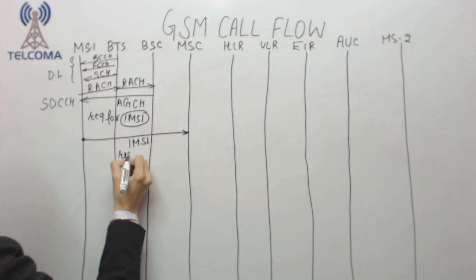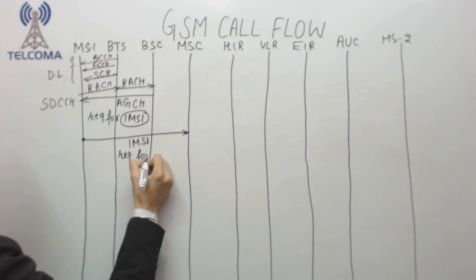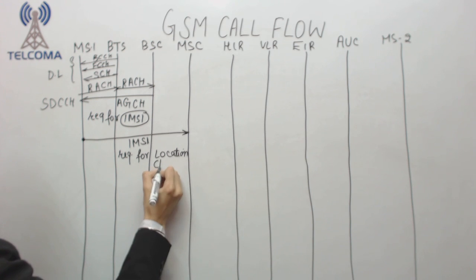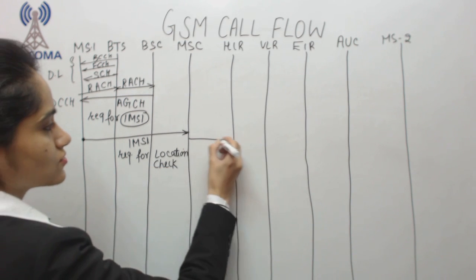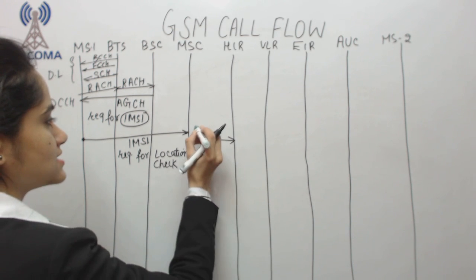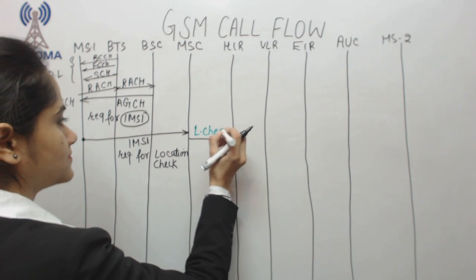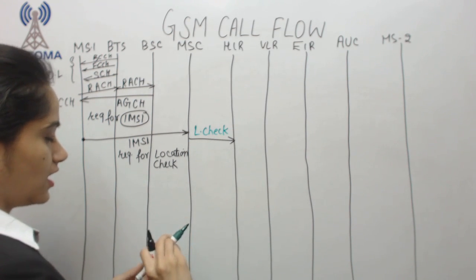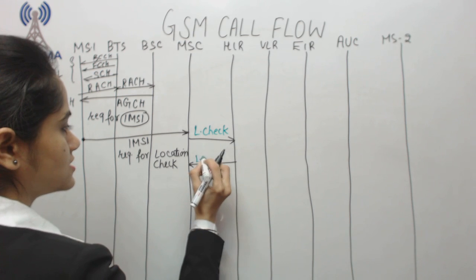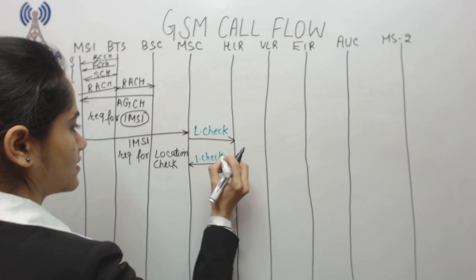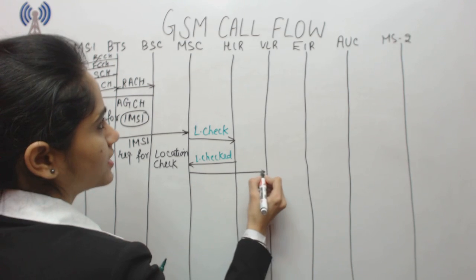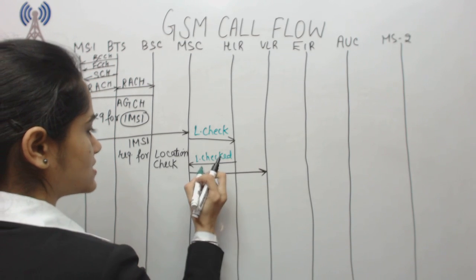The MSC sends a message to the HLR requesting a location check — please check the location of this mobile station. The MSC communicates with the HLR for location verification. After checking the location, the HLR sends a message back confirming that the location has been checked.